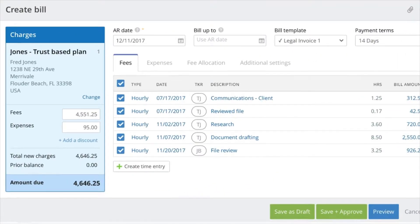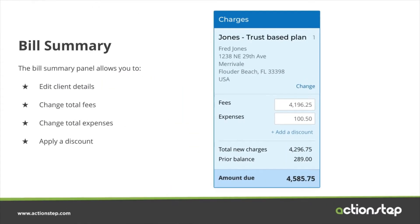This is one screen that shows you all the information related to this particular bill. We're going to break this down into sections and discuss it separately. First of all, let's take a look at the panel that shows on the left, which is the charges. This is a Bill Summary panel, and it allows you to, number one, edit the client details if necessary, and make any changes to the total fees and expenses if needed. If you hadn't entered a discount before, you do have the opportunity to add a discount at this point in the process.